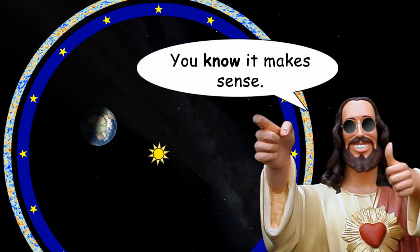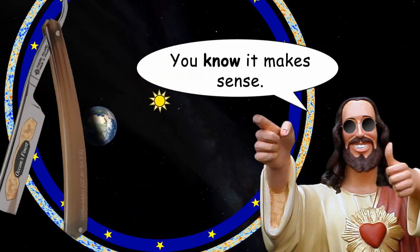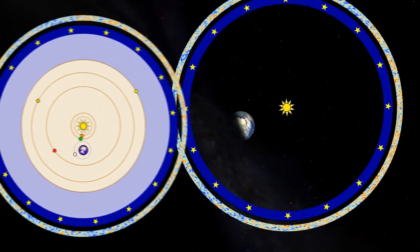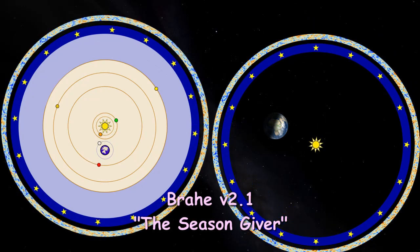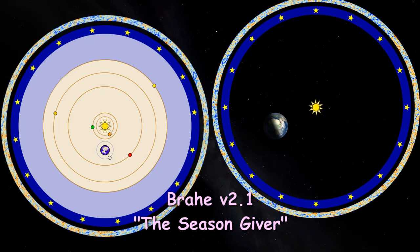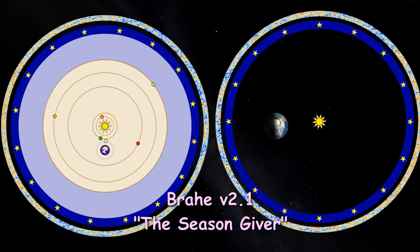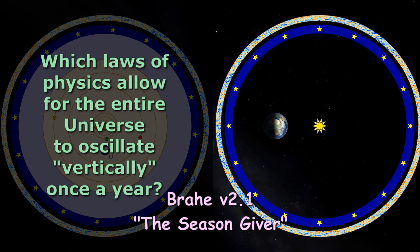As if moving the entire universe this way would somehow be easier than just moving the Sun. Here then we have Brahe 2.1. It has all the features of Brahe 2.0, but this time the entire universe bounces up and down once a year too. Unfortunately, whilst Sungenis claims that this universe obeys all the present laws of physics, he doesn't seem to get around to actually stating which laws of physics allow for the entire universe to oscillate by 74 million miles each year.